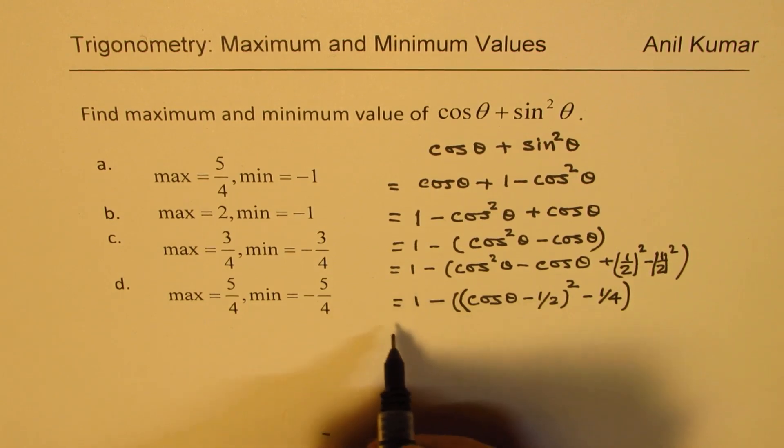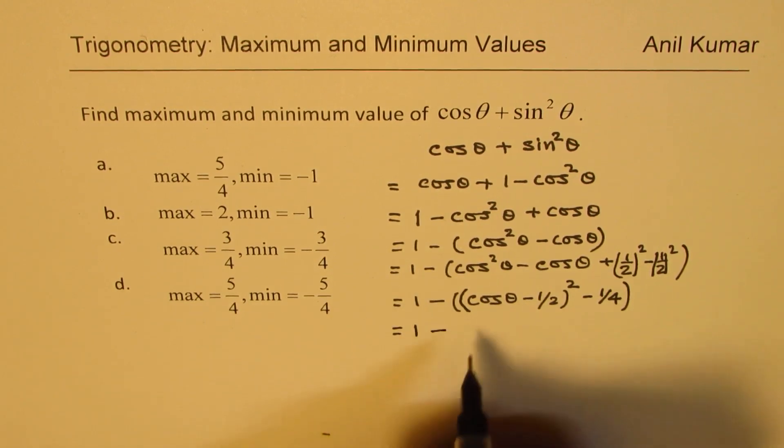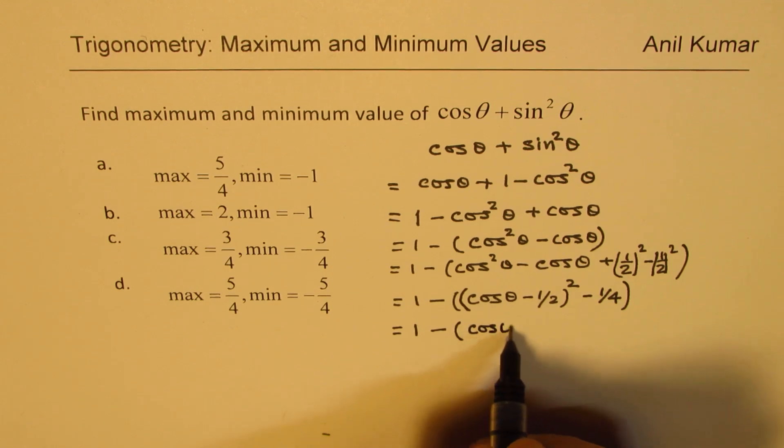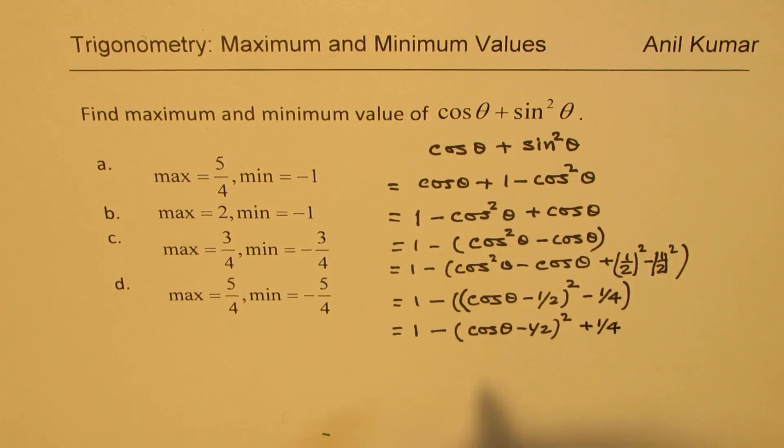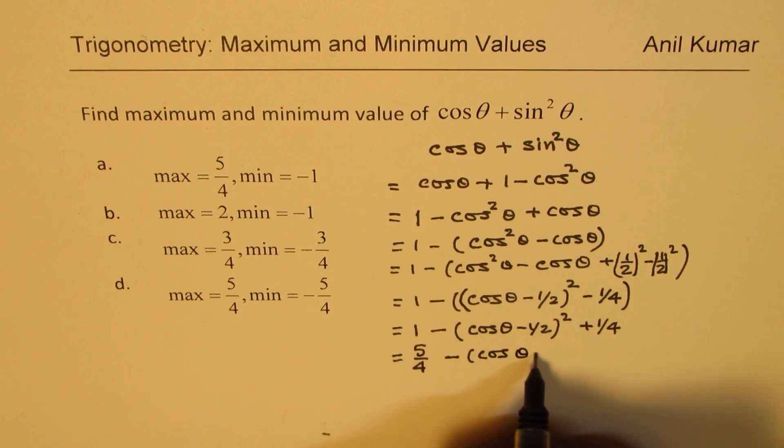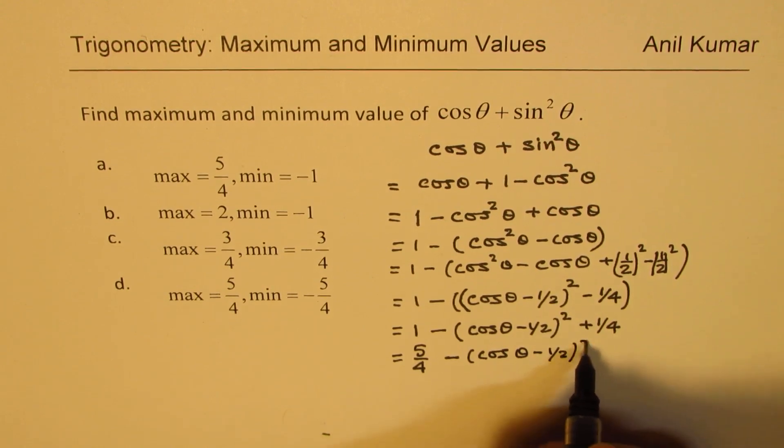Now we can open the bracket. So we get 1 minus (cos θ - 1/2)² becomes plus 1/4. Add 1 and 1/4, what do you get? You get 5/4. So we have 5/4 - (cos θ - 1/2)².